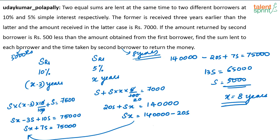It's not a very difficult question. You just have to write down the information correctly and solve it correctly. Two equal sums of S rupees are given to two people: the first at 10% simple interest and the second at 5% simple interest. The first person returns in X minus 3 years and the second in X years. The second person returns 7000 rupees total. The first person returns 500 rupees more, so 7500. Equating and solving, S equals 5000 and X equals 8 years.